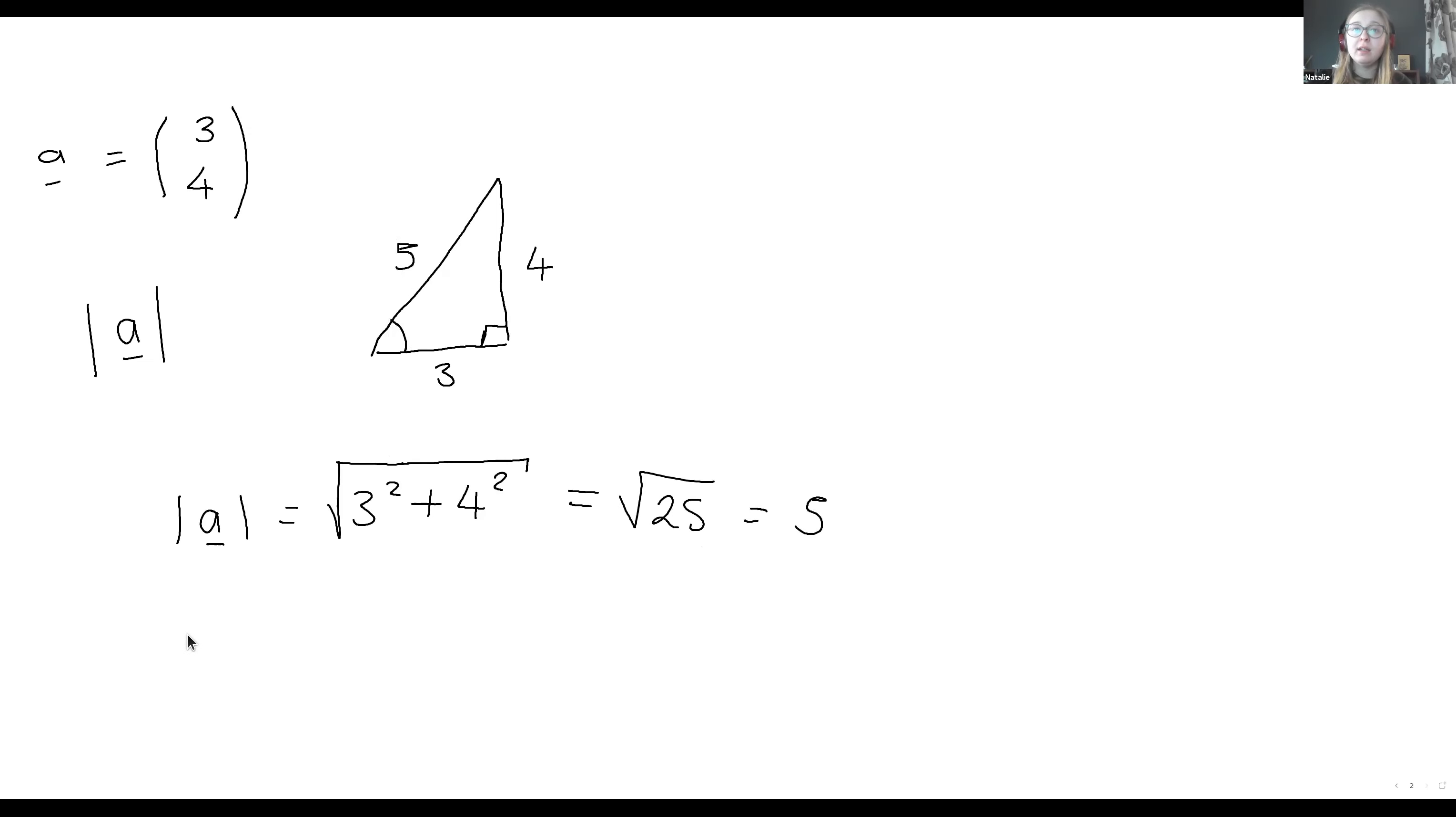The direction of A, which I'm going to give the letter alpha, tan alpha is going to be the opposite 4 over 3. So the direction of A is going to be the inverse tan of 4 over 3. And I can apply this to any two dimensional vector I like. So the magnitude of my vector is going to be the square root of the x part squared plus the y part squared. And the direction is going to be the inverse tan of y over x. And that's going to be true for every vector that you meet, every two dimensional vector that you meet.